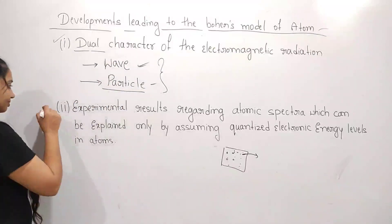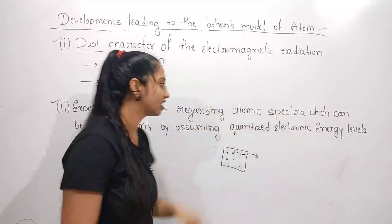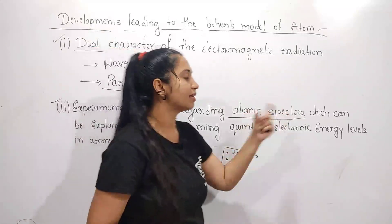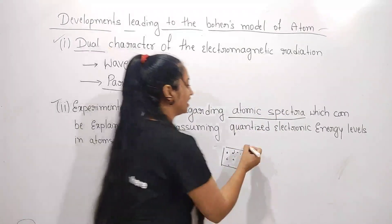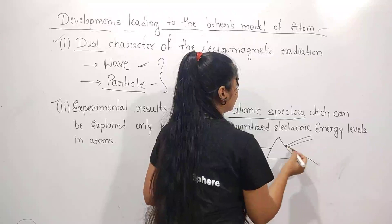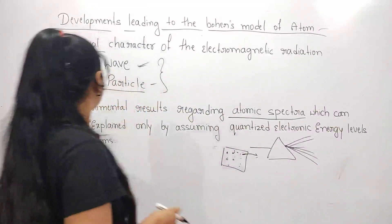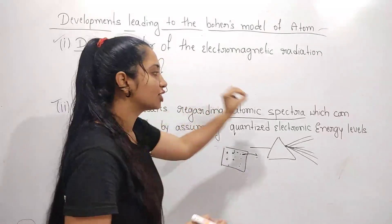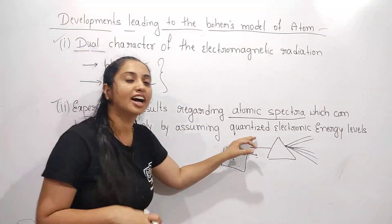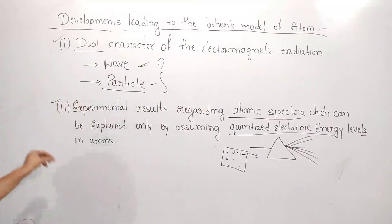The second point is the experimental results regarding atomic spectra. What do we mean by spectrum? If white light passes through a prism, it is scattered or diverted into 7 colors of light. Similarly, the experimental results regarding atomic spectra can be explained only by assuming the quantized electronic energy levels in atoms.